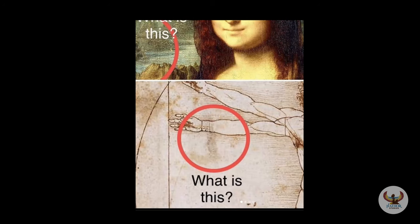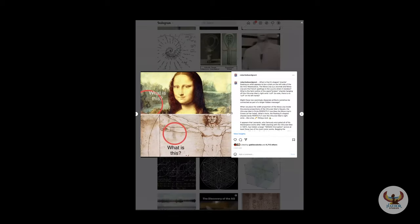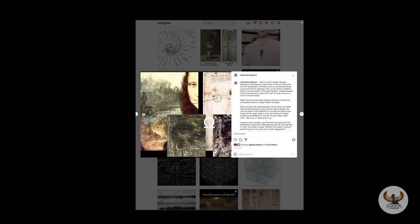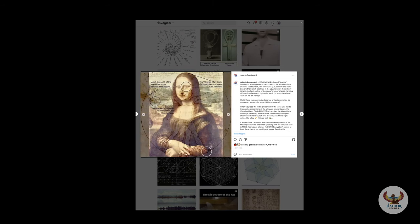So I said, wait a minute — maybe da Vinci's paintings actually all connect to each other via overlays. If we overlay them, is there a message? Because everyone looks for encryptions within each individual painting, but nobody ever looked at encryptions that combine the paintings.